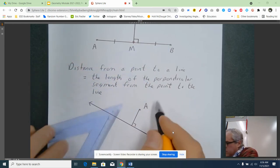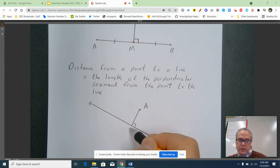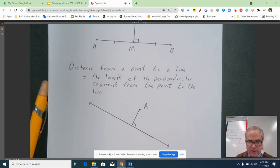And our definition says that the shortest distance from this point A has to be drawn perpendicular to the line. And that's it. That's our two definitions. Thanks.